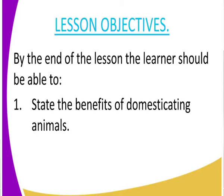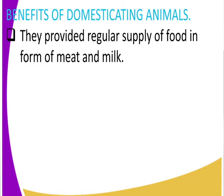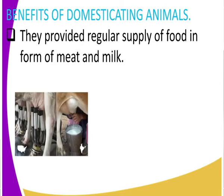First, they provided a regular supply of food in the form of meat and milk. Who can tell us what kind of animals supply us with meat and milk? We have a cow, goat, and sheep — those are the three animals that supply us with meat and also milk.